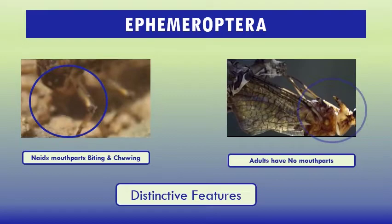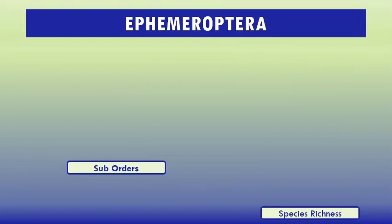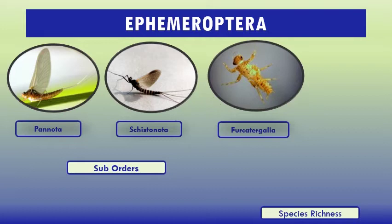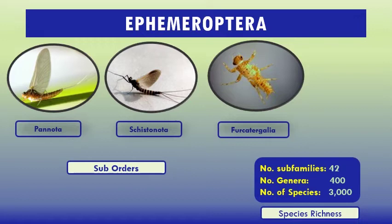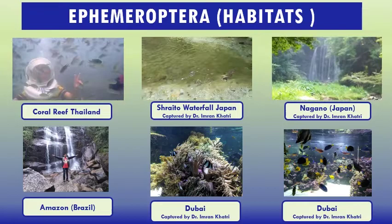Adults have no mouthparts and the digestive system is filled with air. Ephemeroptera has three sub-orders: Panota, Pisciforma, and Scutigerella. Species richness includes 42 sub-families, about 400 genera, and approximately 3,000 species. Mayflies are distributed all over the world in clean freshwater habitats.